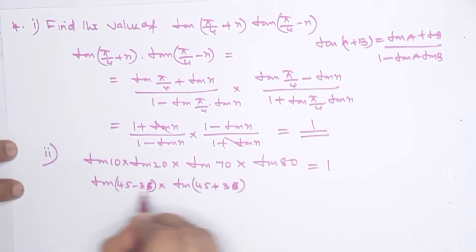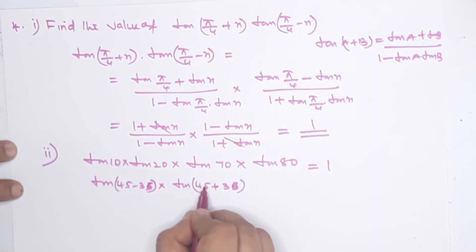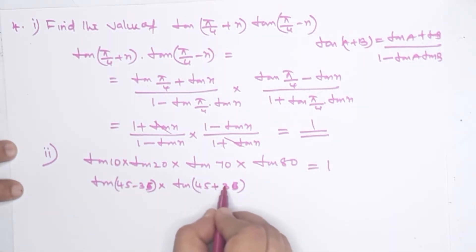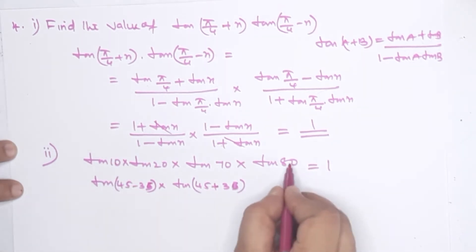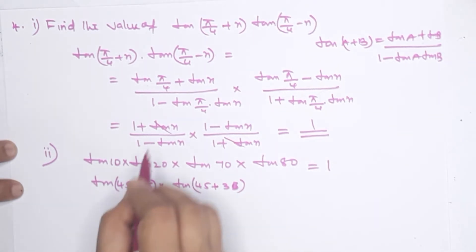Tan45−35 = tan10, and 45+35 = 80. So tan10 and tan80 form one group. 45−25 = 20, and 45+25 = 70, so tan20 and tan70 form another group.